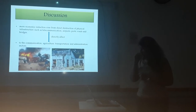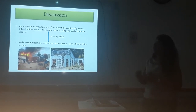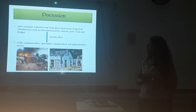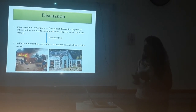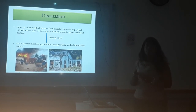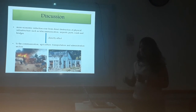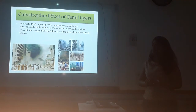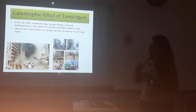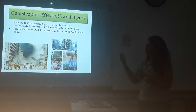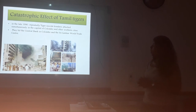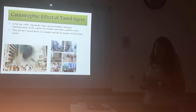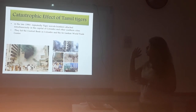More economic reduction was created from direct damage to physical infrastructure facilities such as telecommunications, airports, roads and bridges. This affected the communication sector, agriculture sector, transportation and administration sector. In the late 1990s, Tamil Tiger suicide bombers attacked capital cities, especially Colombo and other southern cities of Sri Lanka.